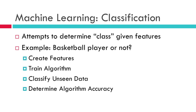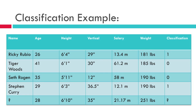A classification algorithm attempts to determine the class given the features — class being like a label. An example I'll show here is: can we determine whether somebody is a basketball player or not? So first we'll create some features, train the algorithm, and then classify unseen data — data the algorithm has not seen — and we'll try to see if it can determine whether or not a person is a basketball player, then determine if it was accurate.